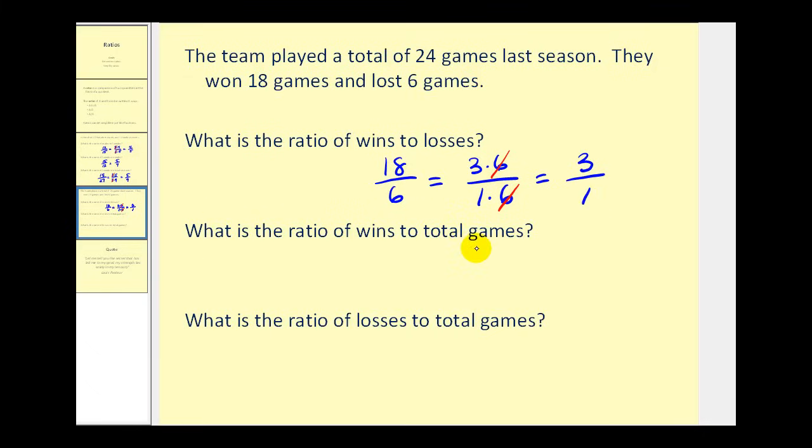Next, what is the ratio of wins to total games? Well there's 18 wins, and the total games would be 18 plus 6 or 24. And again this simplifies. The greatest common factor of 18 and 24 would be 6. So 18 is 6 times 3 and 24 is 6 times 4. So the simplified ratio would be 3 to 4.